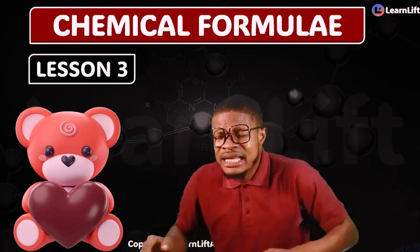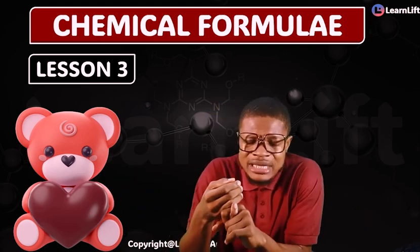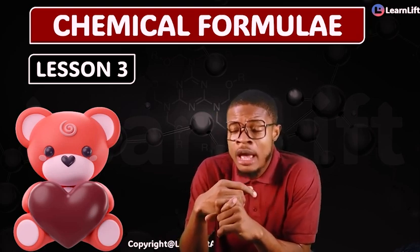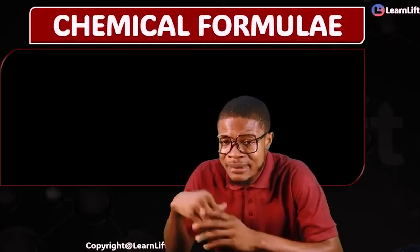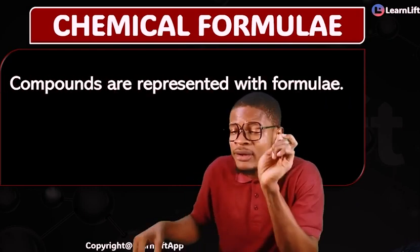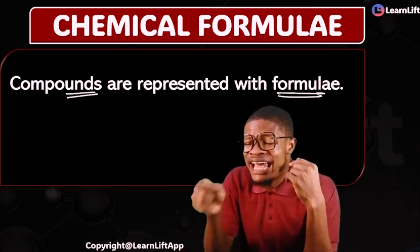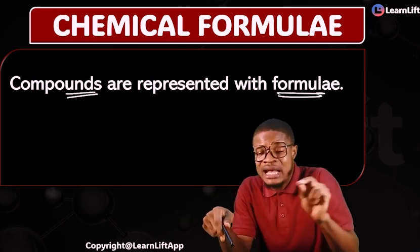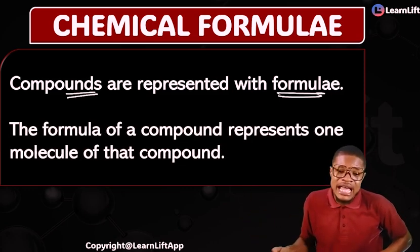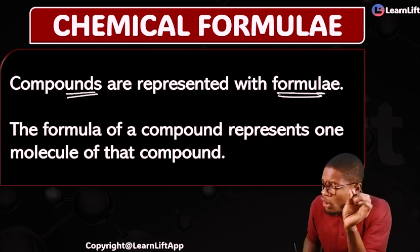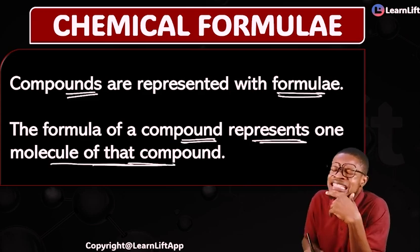Under chemical symbols, elements are represented with symbols. But when we come to chemical formulas, we are no longer dealing with elements — we are dealing with compounds. Compounds are represented with formulas. That's the difference: elements use symbols, compounds use formulas. The formula of a compound represents one molecule of that compound.